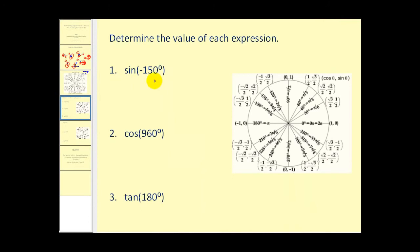We need to figure out where the terminal side of the angle in standard position intersects the unit circle. Let's sketch negative 150 degrees. Because it's negative, we go clockwise 150 degrees — there's negative 90, and negative 60 more brings us to this point. Since sine is equal to y, we have negative one-half.